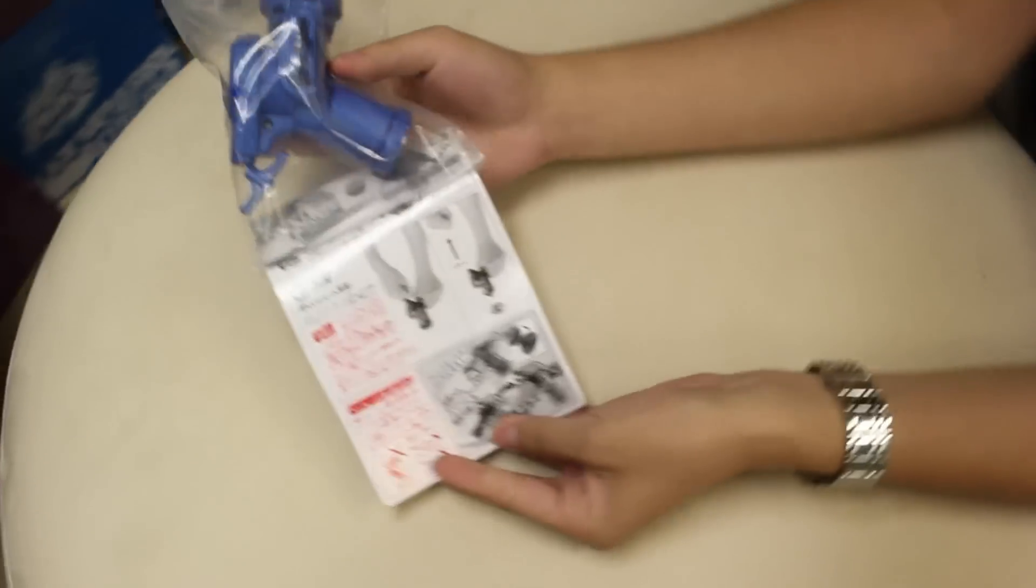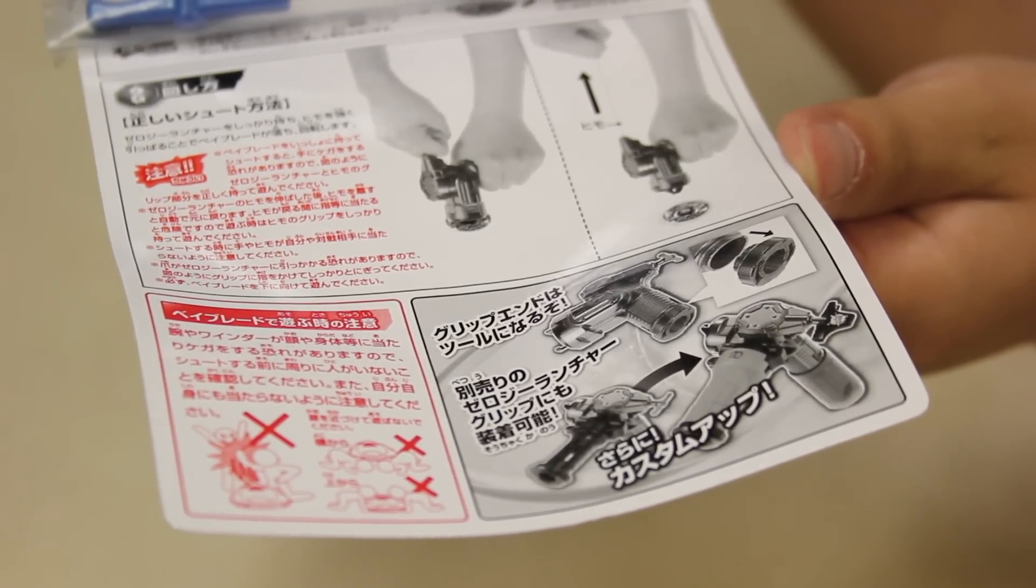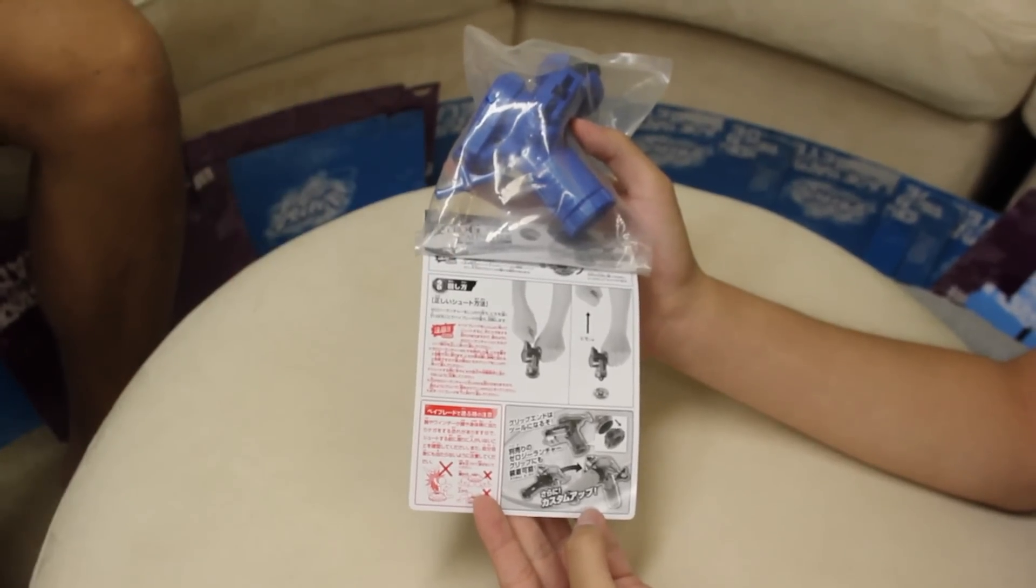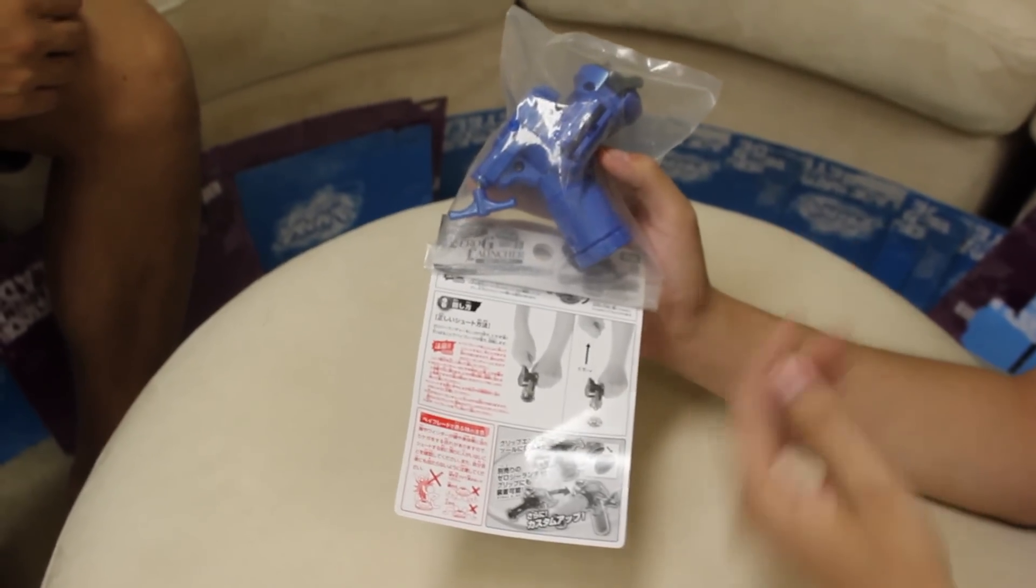So guys check it out, see this picture down here, lots of customization with your other accessories and downward position. Sick for Zero G stadium. This could definitely be more powerful than the light launcher and compact launcher, yep.